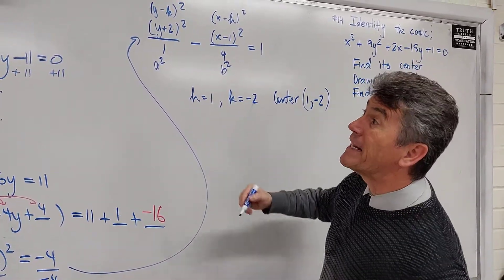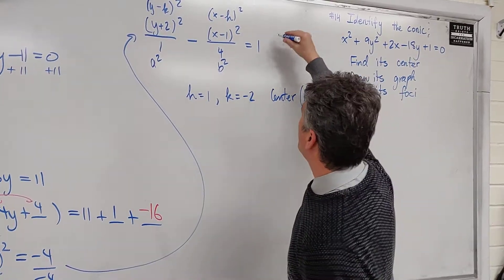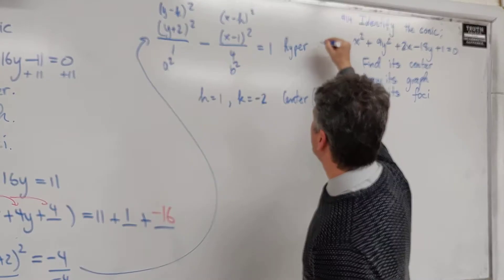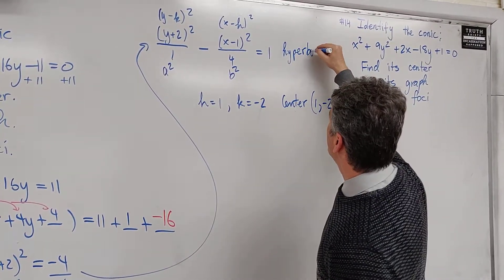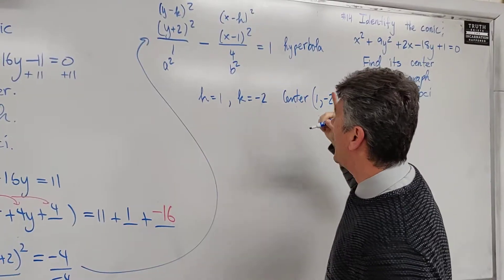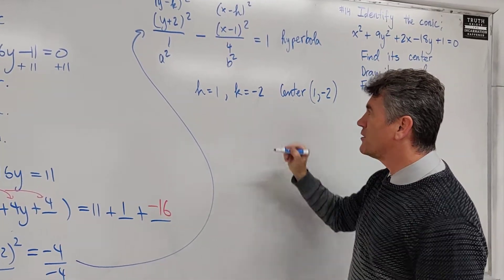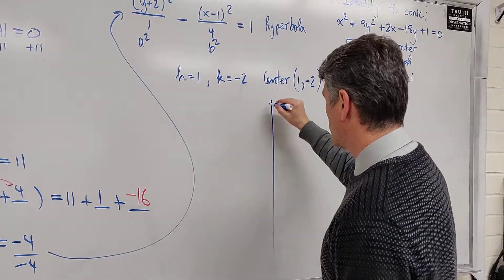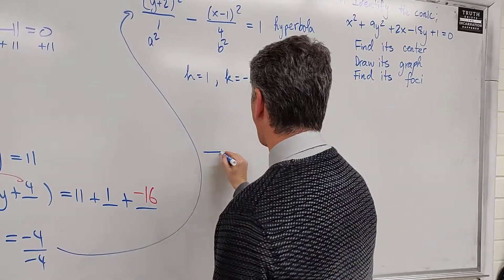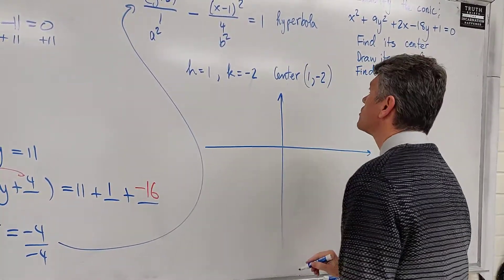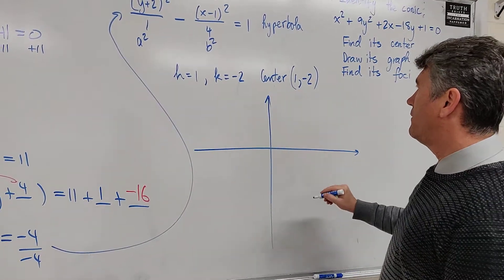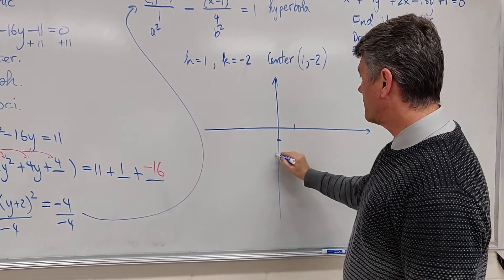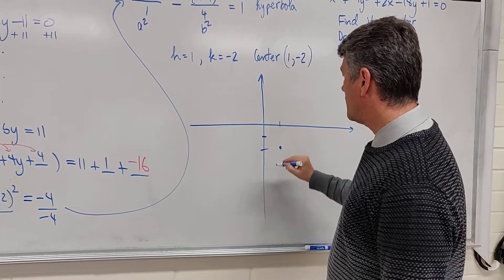I forgot to identify the conic, even though I said hyperbola many times. I'll say it again. This conic is a hyperbola. So I identified it, I found the center, now I'm going to draw this graph. How do you draw a graph? Start with the center plot. Go 1 to the right, go 2 down. Here is your center.